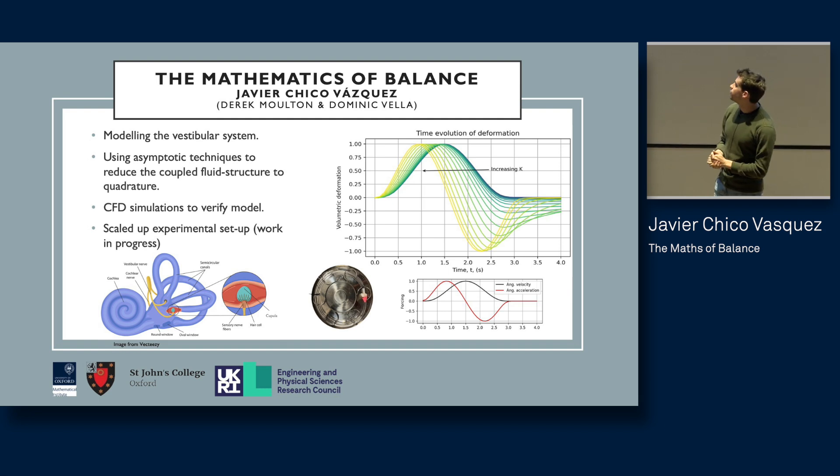What we have done is using asymptotics and exploiting the small parameters in the system, we have reduced the problem to quadrature, meaning we go from a complicated set of partial differential equations to a single integral differential equation. One of the nice results which you can see here on the top right is that by tuning the stiffness of the membrane, you can capture either the velocity or the acceleration, the angular velocity or the angular acceleration. Here on the bottom we have a forcing. This just means if I start with my head here and I rotate it 120 degrees, my velocity is going to be the black curve, my acceleration has two peaks, and by increasing the stiffness, this is the response which is just the deflection of this membrane. I can either tune in to the velocity or the acceleration.